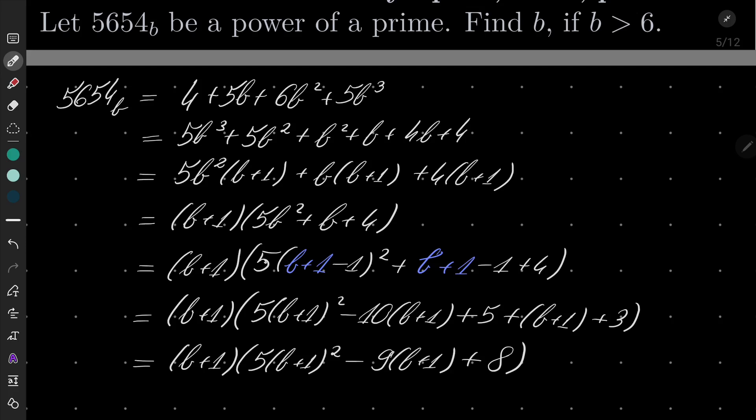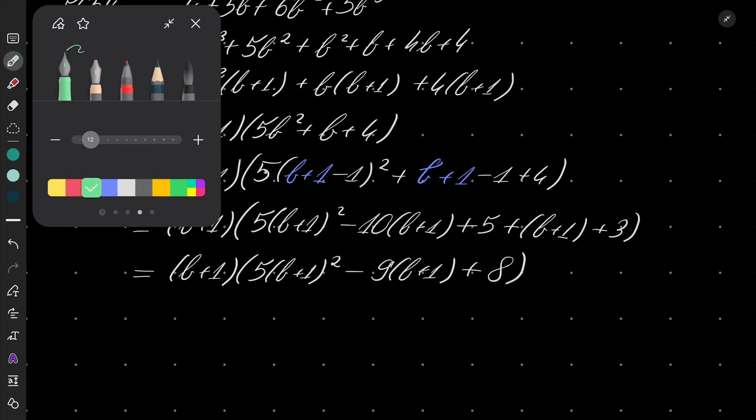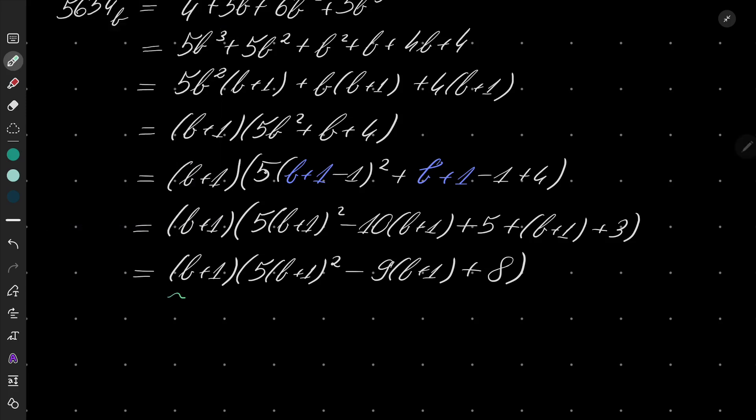So we have this factorization. Now remember that both parentheses must be powers of the very same prime. Let's write that B plus 1 is P to the power of K, where K is a positive integer and P is a prime. The question is, what prime is this P? Can P be odd?